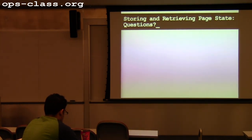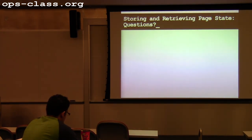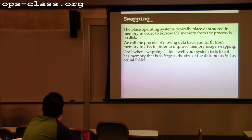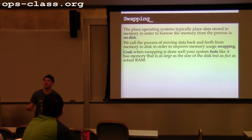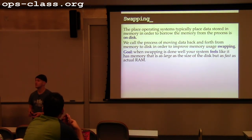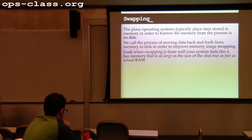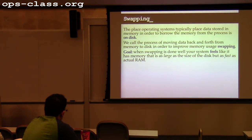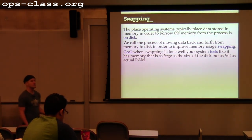Any questions about this before we venture forward? So this is how the kernel translates virtual pages into information about a page. Reclaiming memory requires that we store the content somewhere else while we reclaim that page to give to another process. The place we put it is on disk. Typically swap files are transitory — they're not stored across reboots.